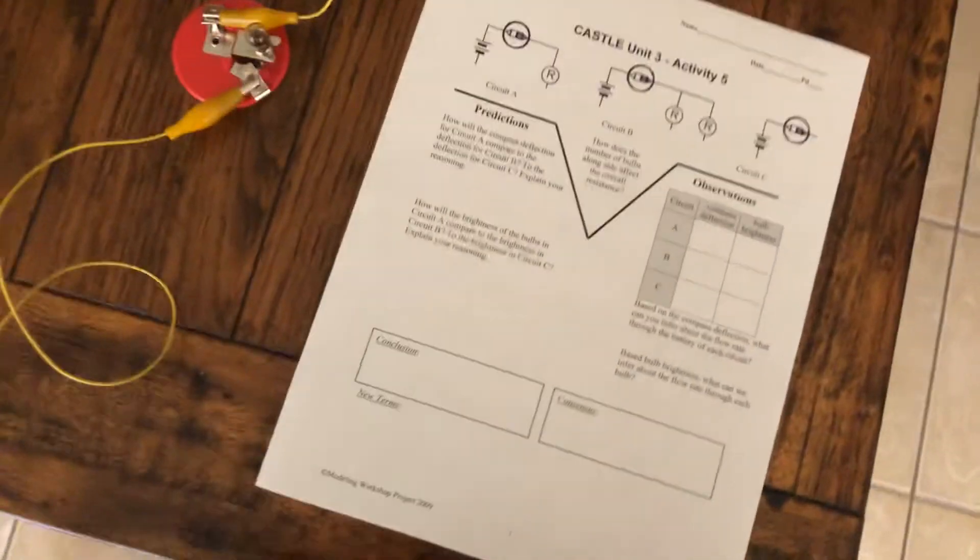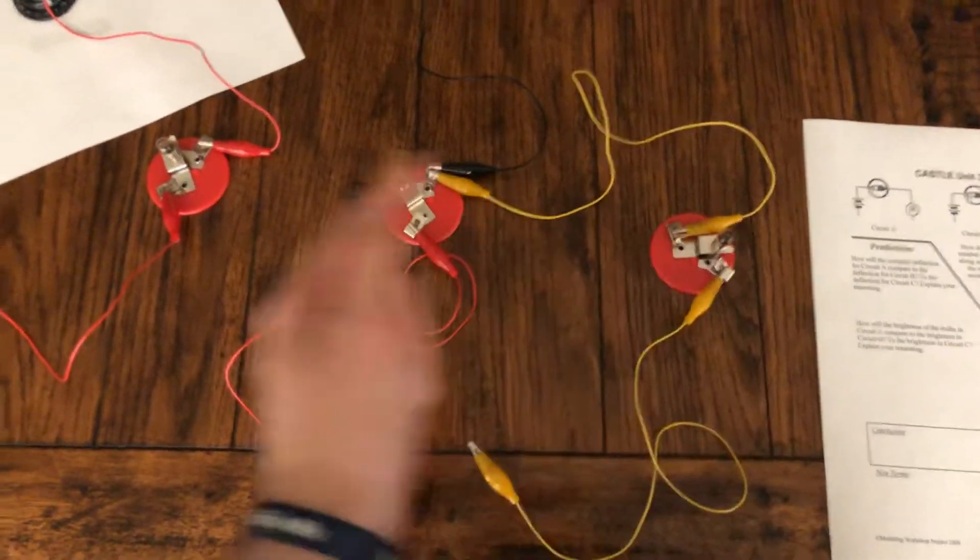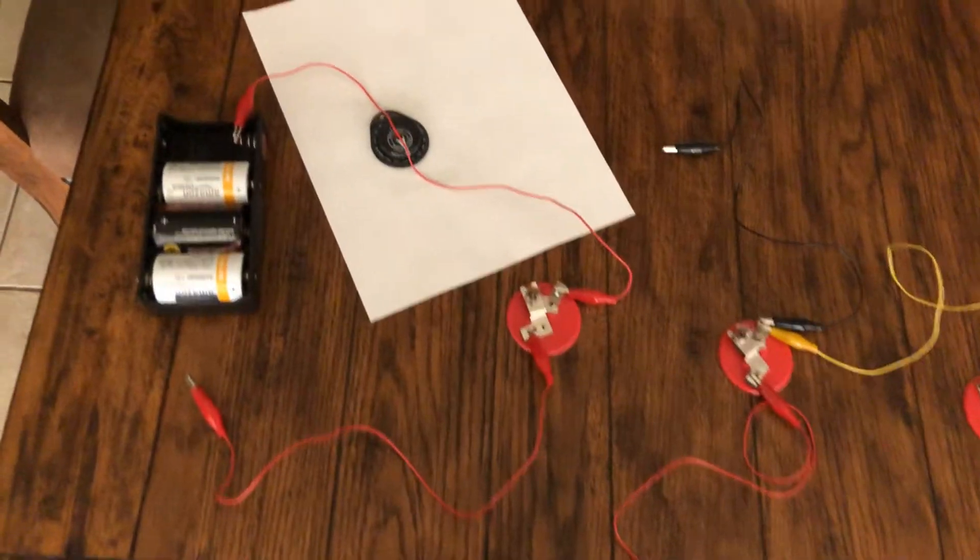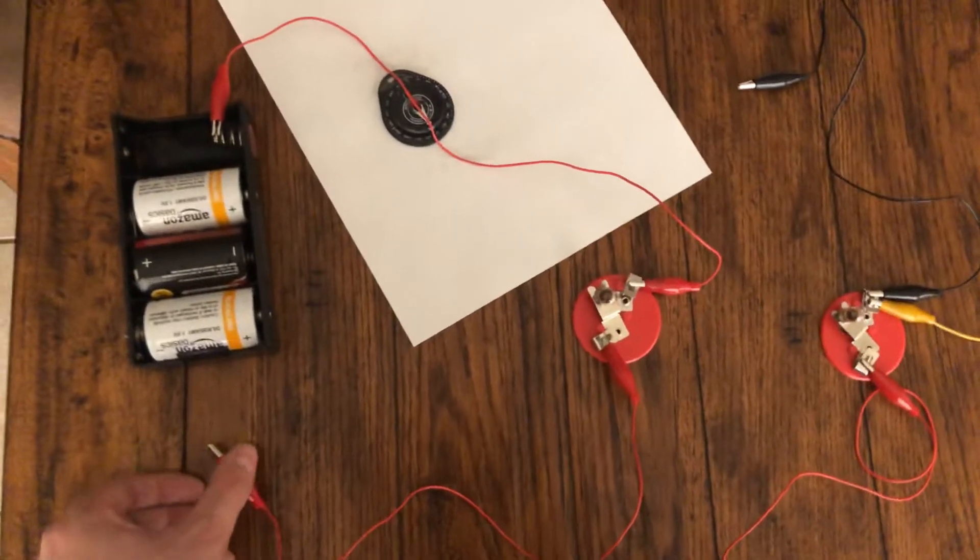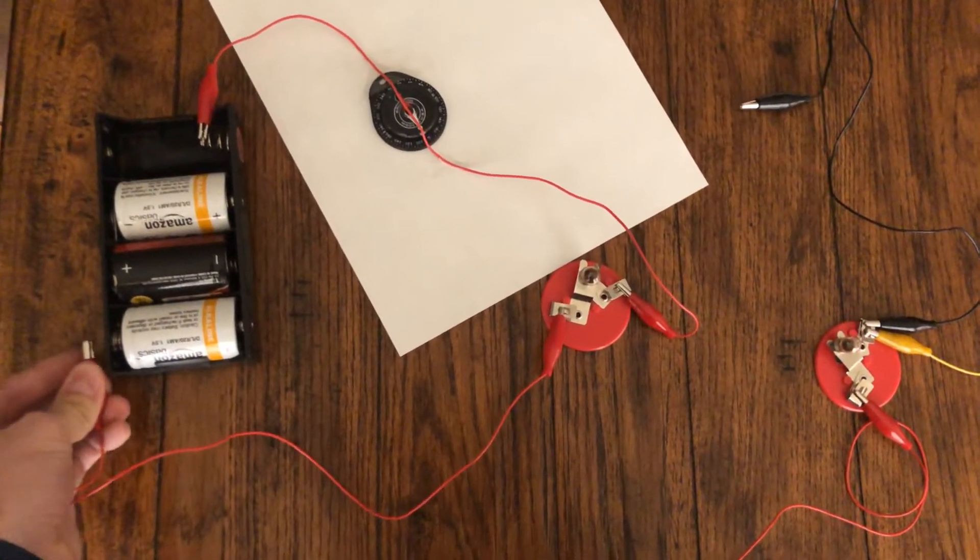Okay, so we want to know how is the charge flow and thereby the resistance going to change as we add more bulbs for the charge to flow through in these branches. We'll start out with the first one in circuit A. You'll see that my bulb is going to be pretty bright here.